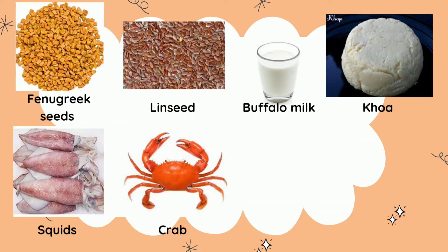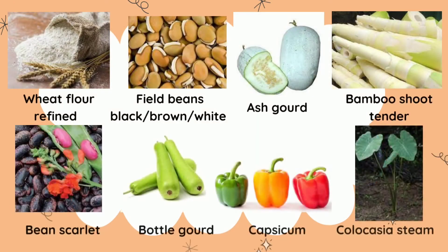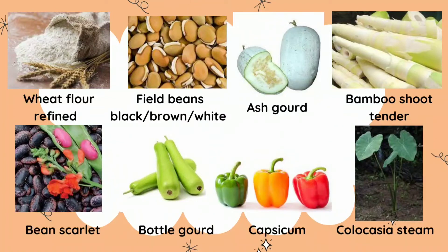Other moderate sources include mango raw, radish, cloves, coriander seeds, cumin seeds, fenugreek seeds, linseed, fellow milk, and crabs. Low sodium foods — below 2 mg per 100 grams — include wheat flour, refined field beans, black, brown, white ash gourd, bamboo shoot, tender beans, scarlet, bottle gourd, capsicum, and colocasia stem.